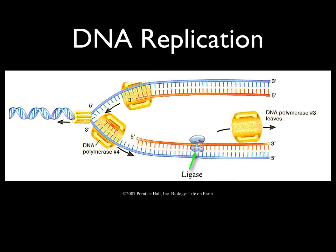To summarize DNA replication: DNA helicase binds to DNA, breaks the hydrogen bonds between the complementary base pairs, and forms a replication bubble. DNA polymerase then moves in, attaches to both original DNA strands, and moves in the 3 prime to 5 prime direction making a new complementary strand. One new complementary strand is synthesized as one continuous piece, while the other is made in segments — those segments are later stitched together by DNA ligase. After the podcast, be sure to watch the YouTube video on DNA replication for more detail.